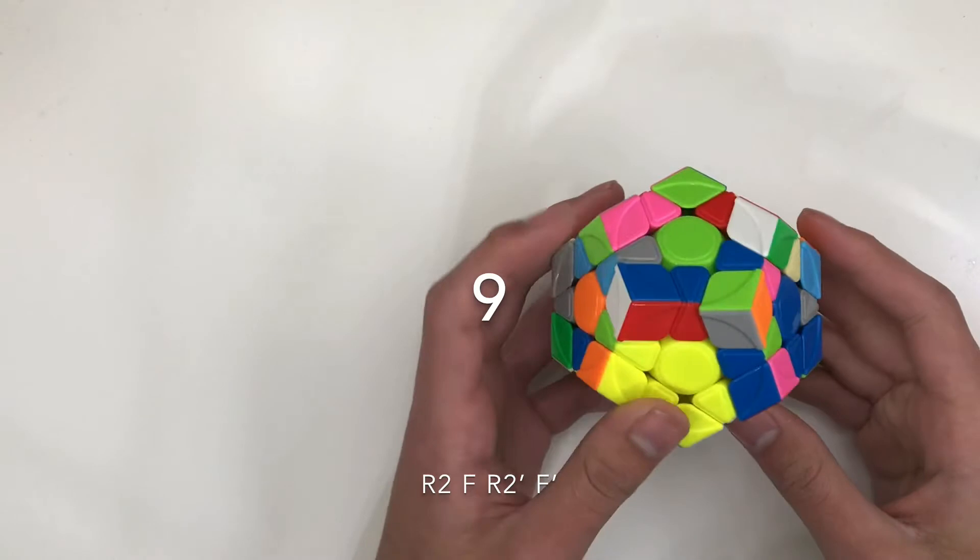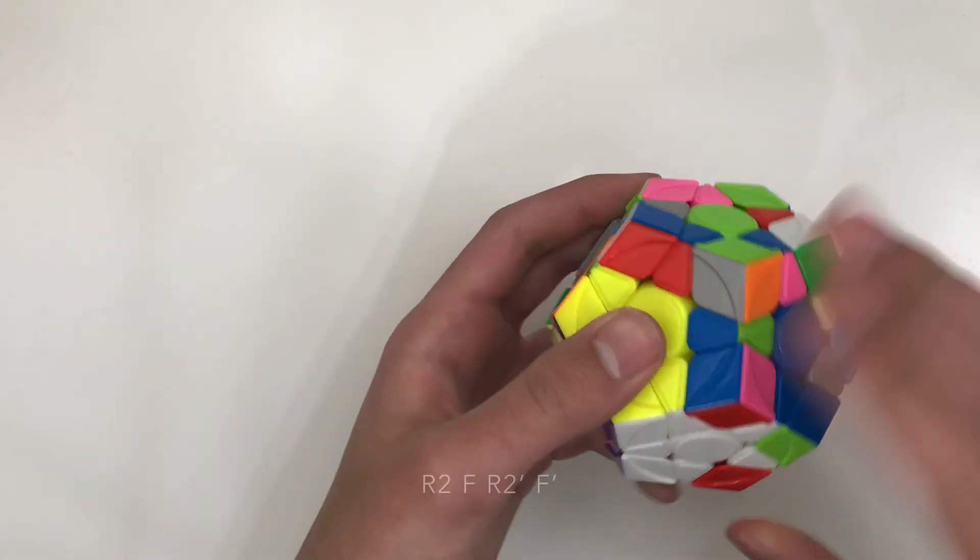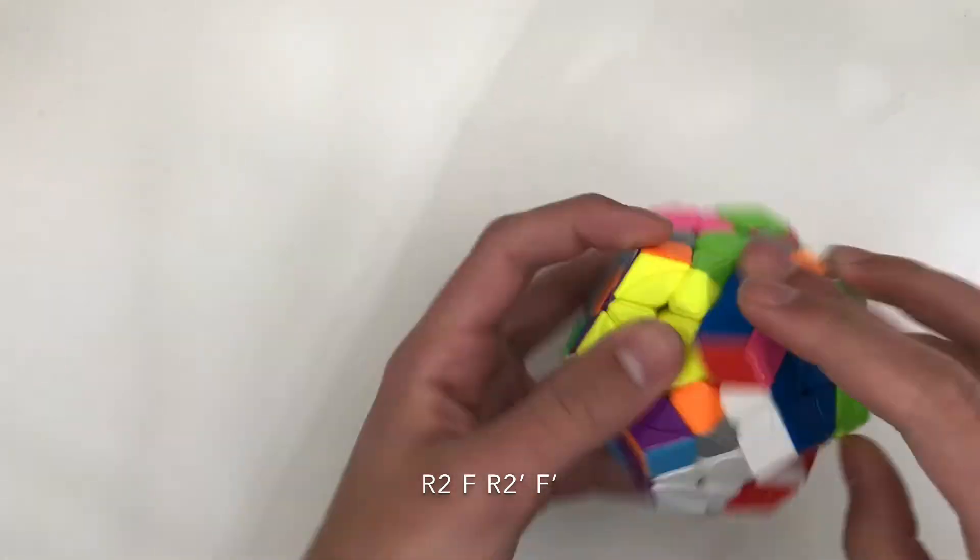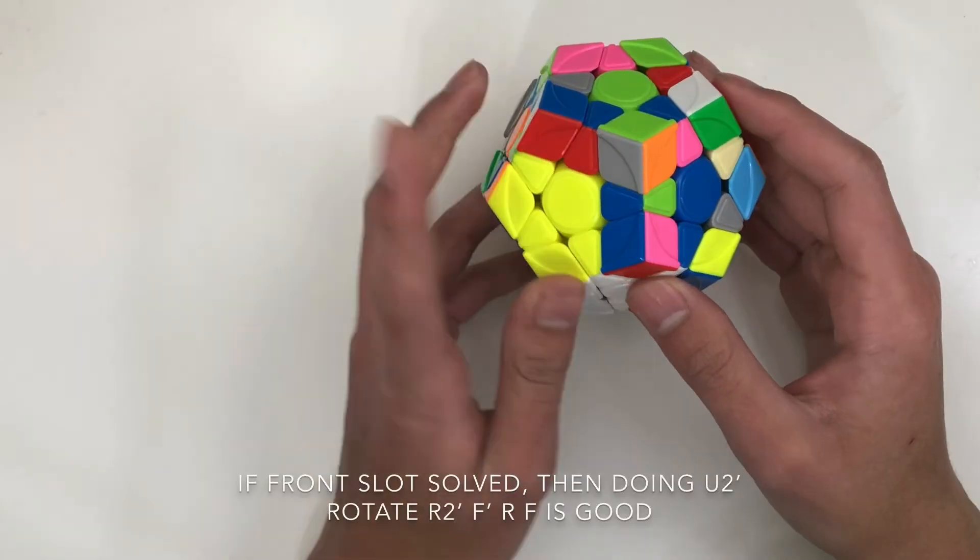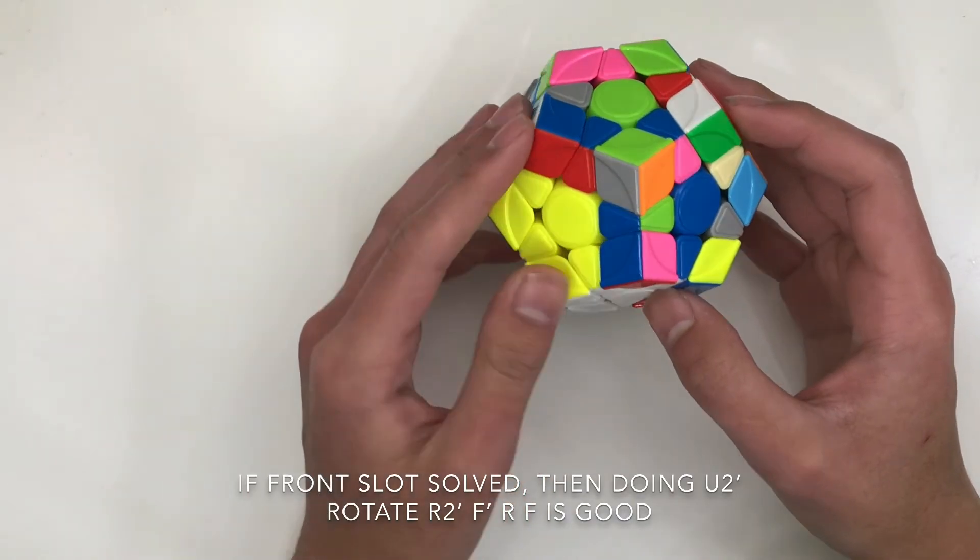For the mirror of this case, where you're inserting this and the slot is on the right instead, it's better to just do R2, F, R2', F'. Be aware that this algorithm breaks this front slot, but if it is open, then you can solve it super quickly.